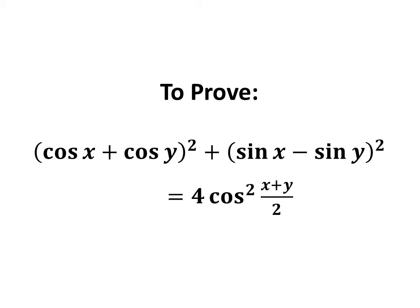In this video, we will learn to prove the equation: square of cosine of x plus cosine of y, plus square of sine of x minus sine of y, is equal to 4 times square of cosine of x plus y upon 2.